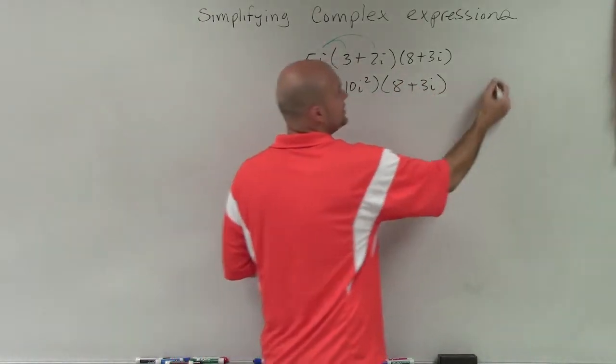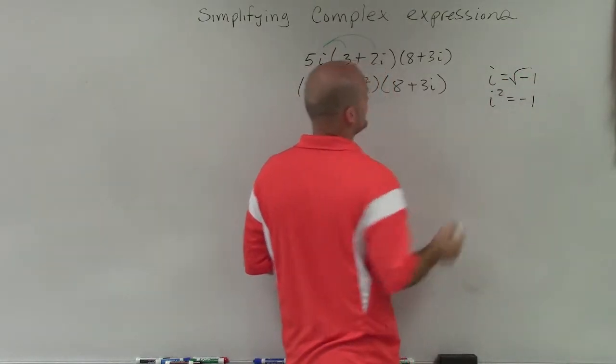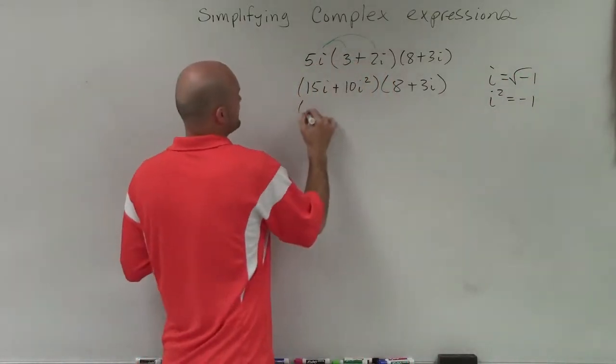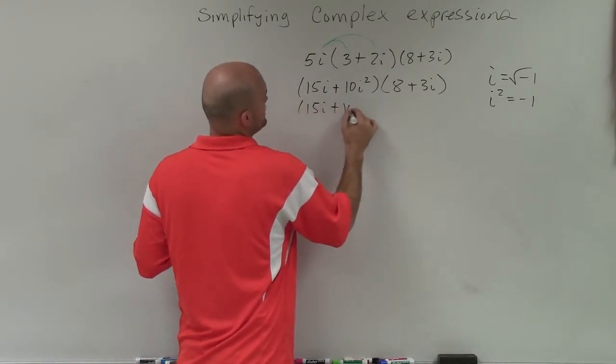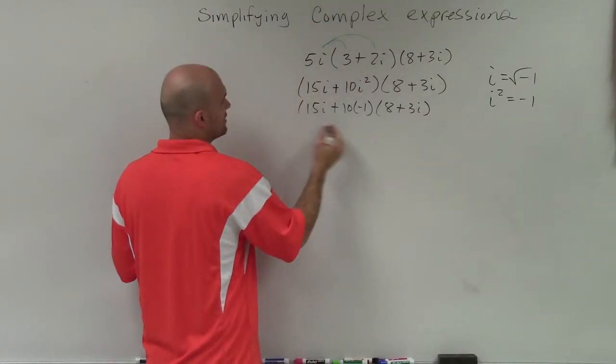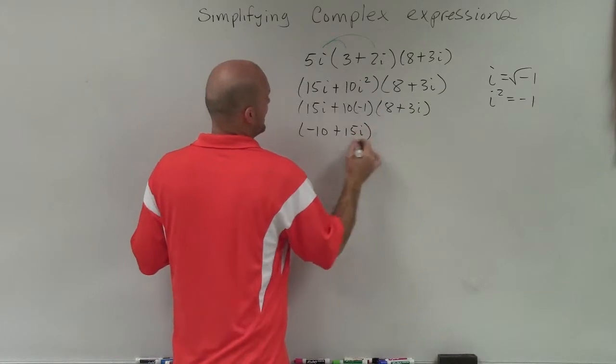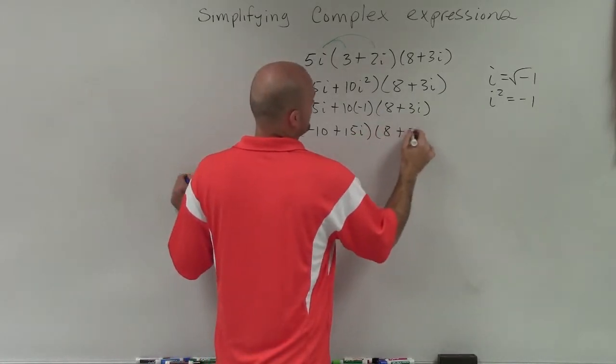Now remember, when we're talking about imaginary units, we know that i equals the square root of negative 1, so i² equals negative 1. I'm going to rewrite this as 15i + 10 times negative 1 times (8 + 3i). Therefore, I can rewrite this as (-10 + 15i) times (8 + 3i).